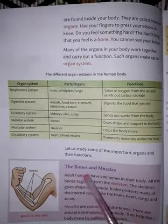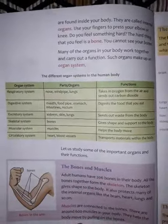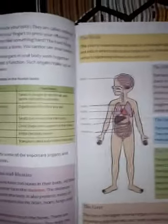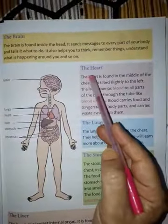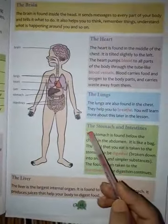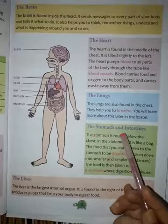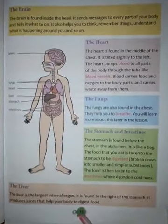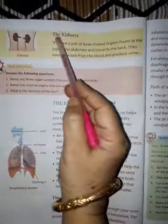Some of them are the bones and the muscles, which are explained here — you have to read those. Then comes the heart on page number 11, as well as the brain, the heart, the lungs, the stomach and the intestine, and the liver — all these are done in detail on page number 11. On page number 12 comes the other organ, that is the kidneys.